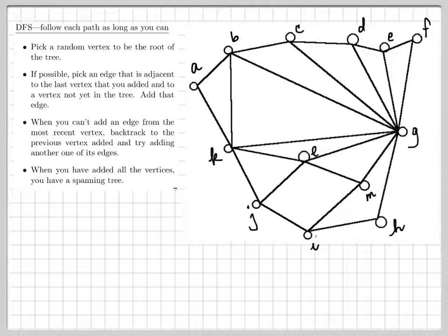Let's start with the depth first search. The idea is once you pick a vertex to act as the root of your tree, you want to create as long a path as you possibly can by adding another edge until you can add no more edges without actually creating a cycle. At that point you start backtracking until you can add more edges. It's easiest to see as an example, so let's go ahead and work through a depth first search on the graph as labeled here.